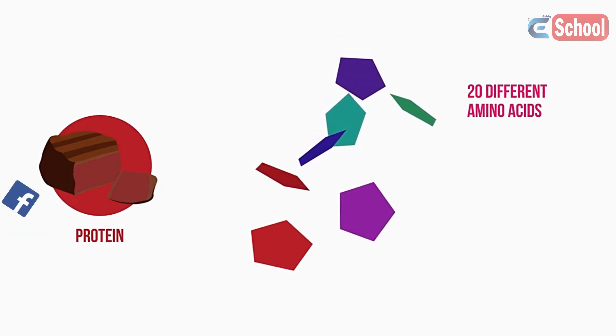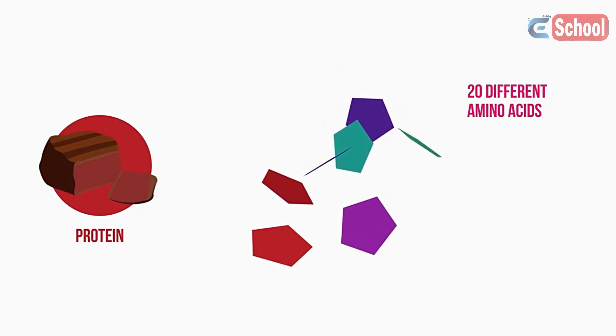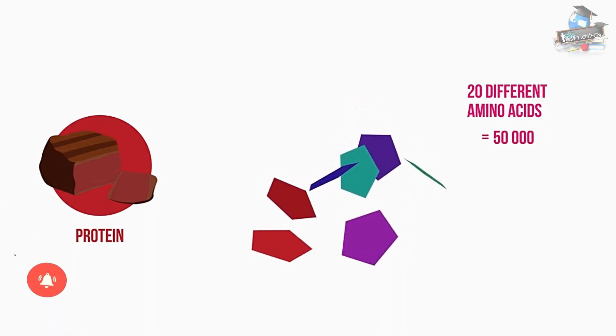There are 20 different amino acids that make up proteins. The order of amino acids varies in different proteins, and so 20 different amino acids means an almost infinite number of different proteins can be made. It is estimated there are about 50,000 different proteins in the human body alone.